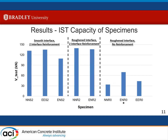When we analyzed our results, we looked at the IST capacity of each specimen first. I split the plot into three different parts: the first part represents smooth interface with two interface reinforcements, the second part represents rough interface with two interface reinforcements, and the third part represents rough interface with no reinforcement. The first thing to notice is that all members in the first two parts of the plot show similar IST strengths, which is expected, and this member in particular is the most conventional type we see for this connection.